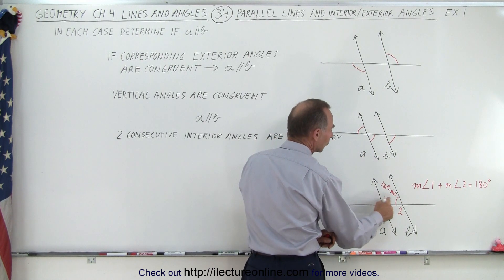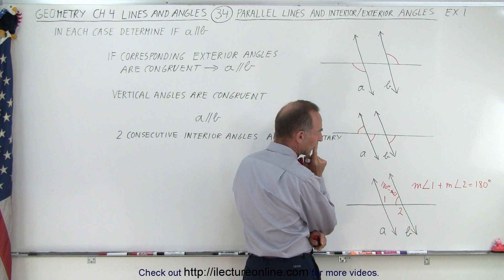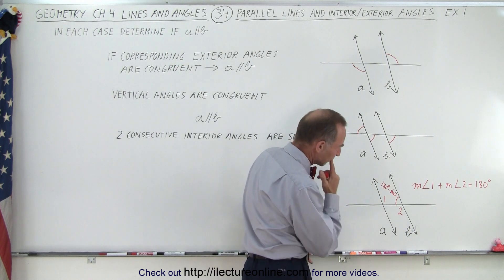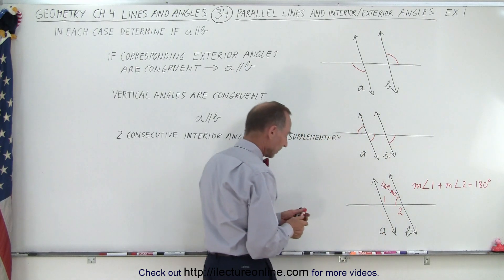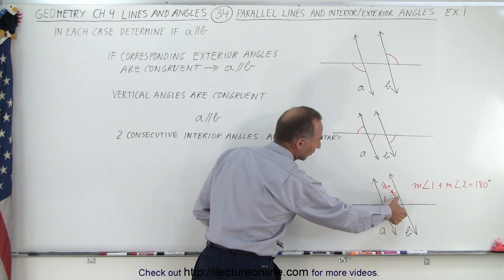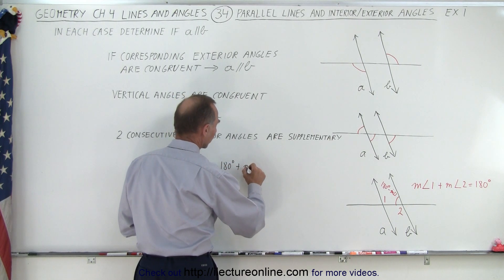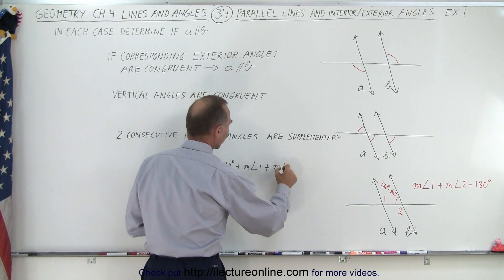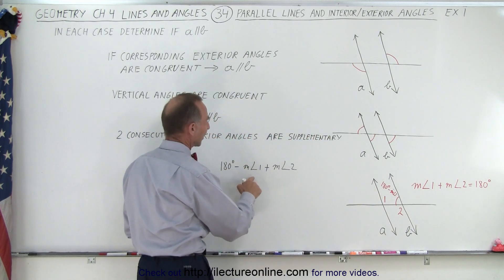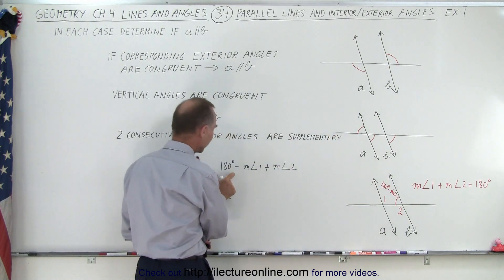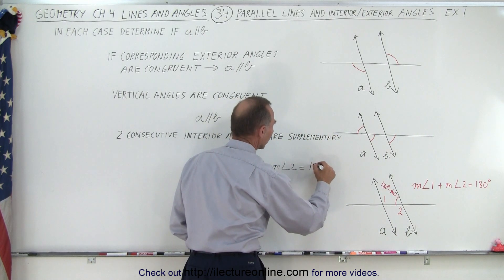Now I can see that we have two corresponding angles here — this angle must equal this angle. What I can do is see that these two angles must be supplementary. So I can write that 180 degrees minus the measure of angle one, plus the measure of angle two, equals 180 degrees.